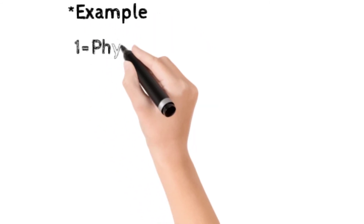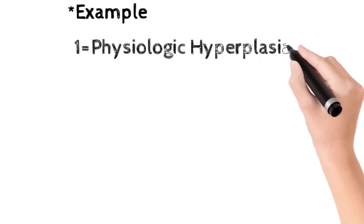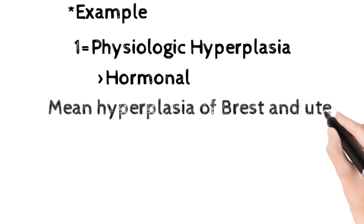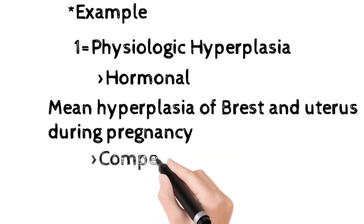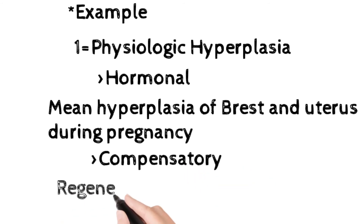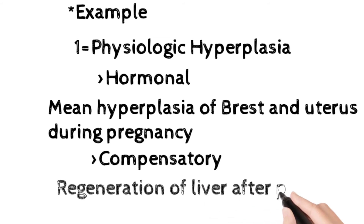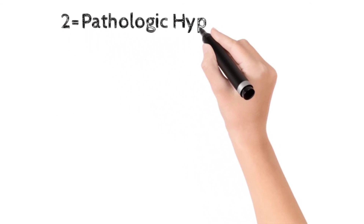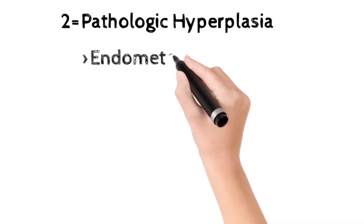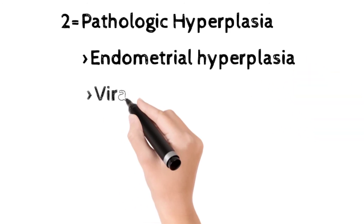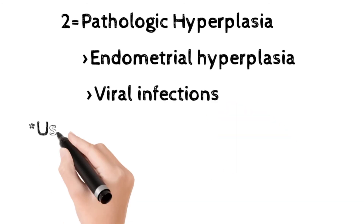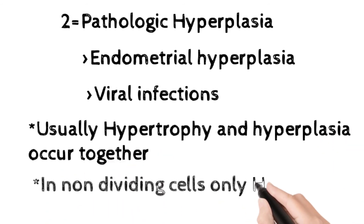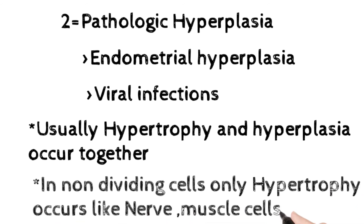Examples of hyperplasia: physiologic hyperplasia includes two types — first, hormonal hyperplasia, such as hyperplasia of the breast and uterus during pregnancy due to hormones; second, compensatory hyperplasia to compensate for loss, like regeneration of the liver after partial removal. Pathologic hyperplasia occurs in viral infections. Note that hypertrophy and hyperplasia often occur together, but in non-dividing cells such as nerve and muscle cells, only hypertrophy occurs because they do not divide.